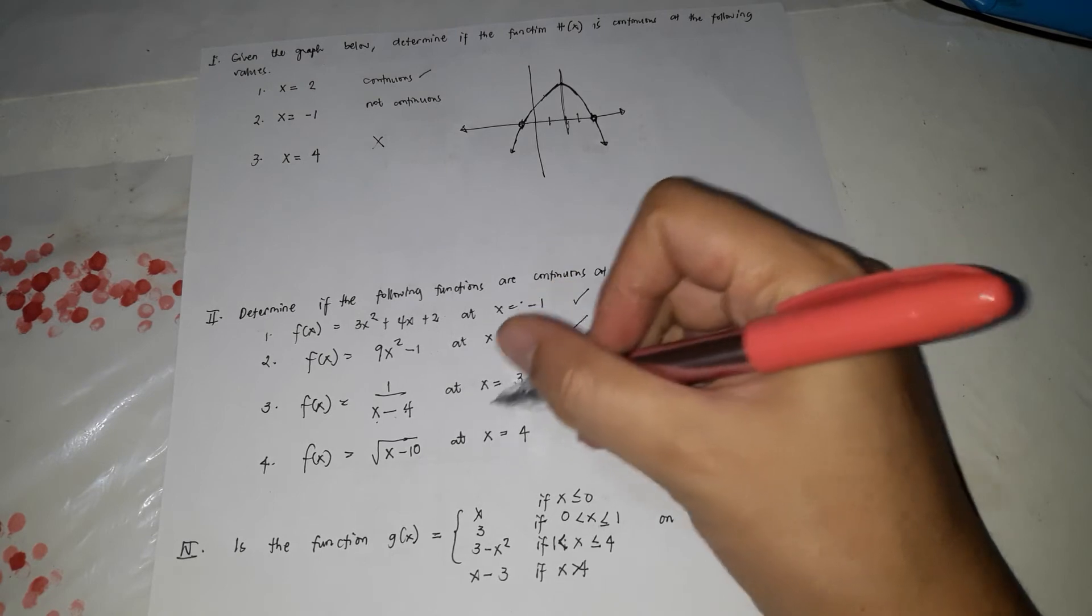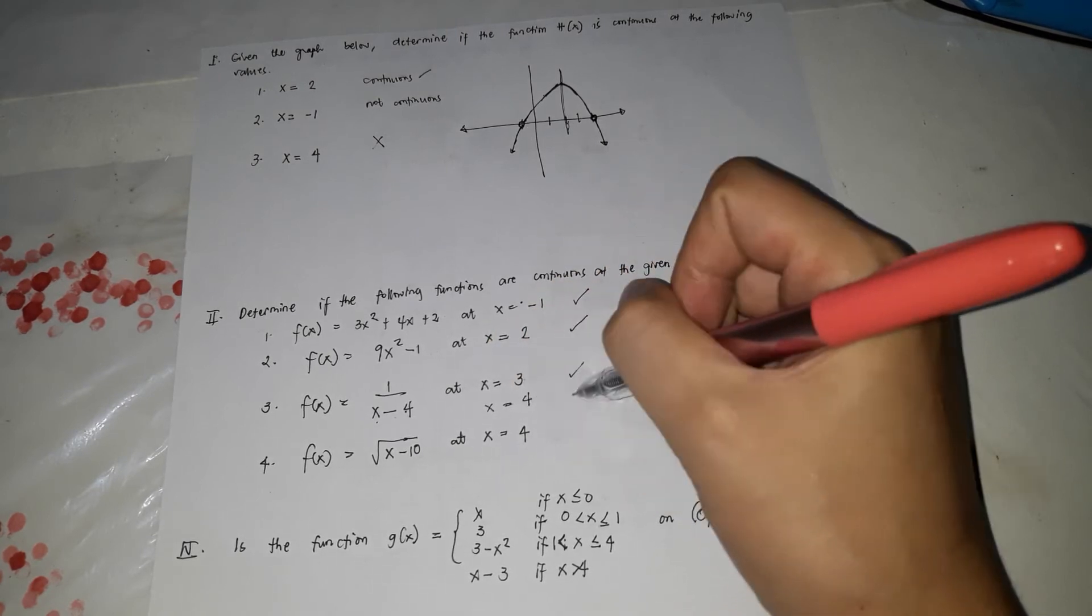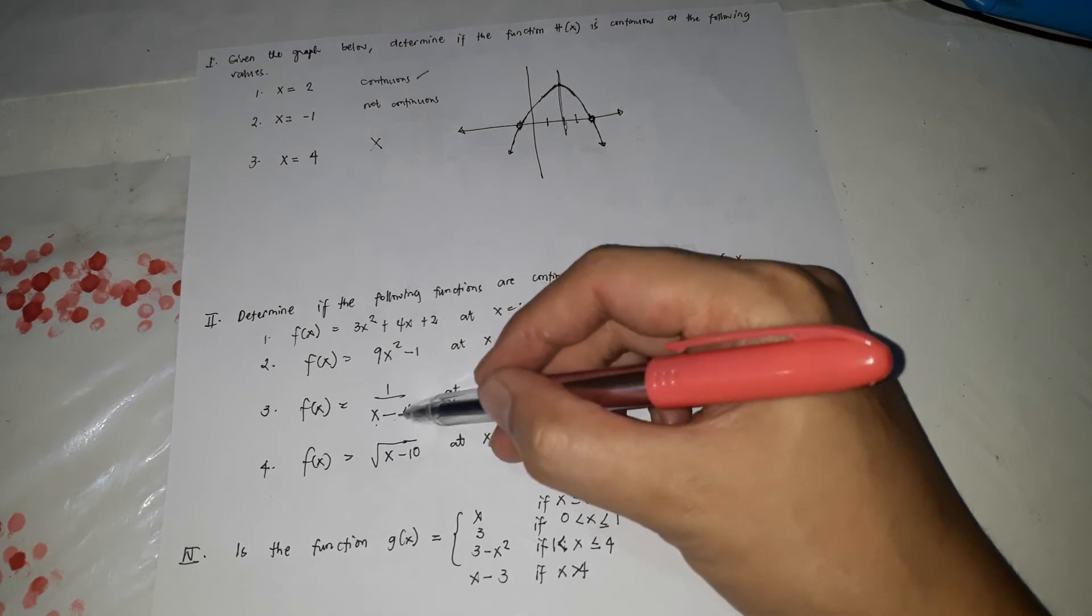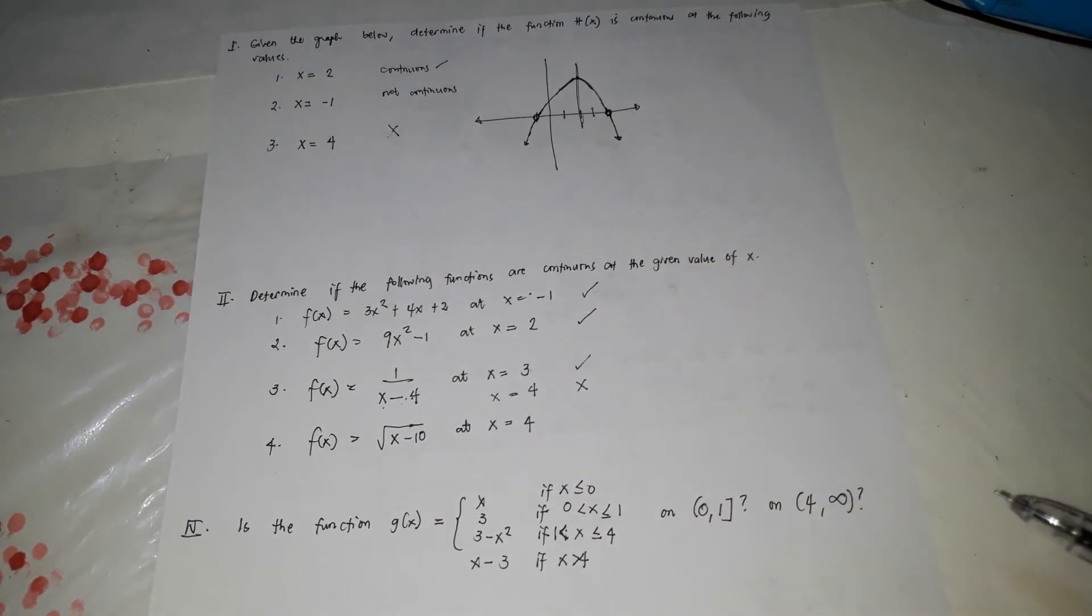So, check. But if this x is equals to 4, that's x. Kasi 4 minus 4 is zero. So, bawal ang denominator magiging zero because it's undefined.